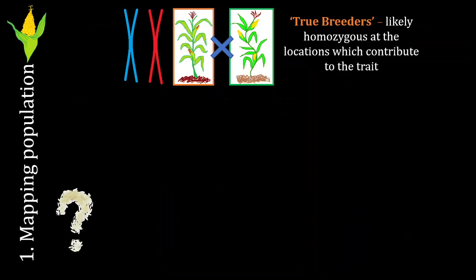The mapping population is a group of related individuals we characterize in order to locate our QTLs. To create it, we first take individuals showing extreme trait values at both ends of the spectrum. For example, if studying drought tolerance in a crop, you need individuals with very high drought tolerance and individuals with very poor tolerance. These are known as true breeders due to their extreme phenotypes and are likely to be homozygotes at the critical loci underlying the trait of interest.